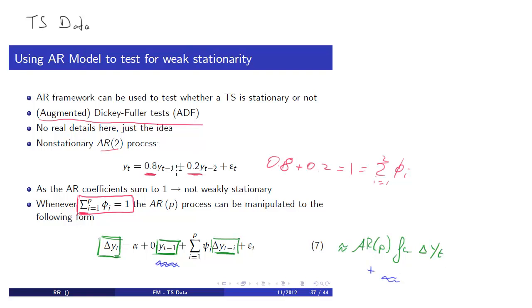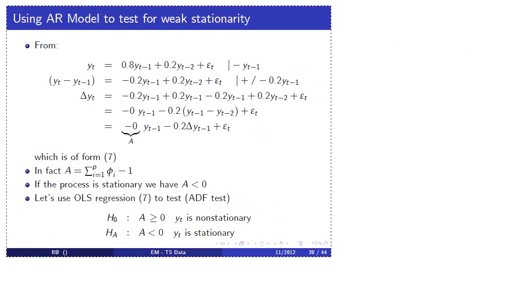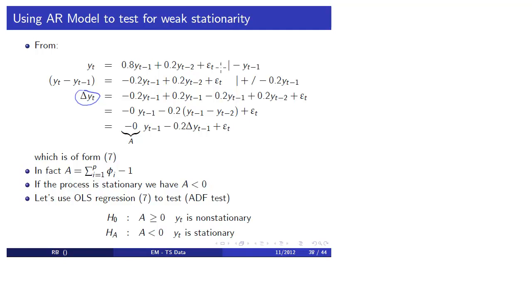I want to demonstrate that this works for this particular case. We start out from our process: 0.8 y_{t-1} plus 0.2 y_{t-2}. The first thing we do is subtract y_{t-1}. Why? Because on the left-hand side what we want to end up with is delta y_t, and the definition of the change is the current value minus the previous value. So we subtract y_{t-1} to fix the left-hand side. On the right-hand side we have 0.8 times y_{t-1} minus y_{t-1}, which delivers negative 0.2 y_{t-1}, and everything else remains unchanged.